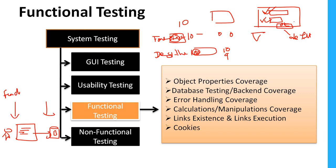Database functional testing is done by one team and database structural testing by a separate team, because that team needs in-depth knowledge of the complete database. As part of functional testing we perform DML operations — insert, update, delete, and select — and verify whether those operations from the front-end are properly reflected in the database. For example, we delete a record from the UI and verify it is deleted from the table, or retrieve data by providing an account number and verify the correct data is returned.